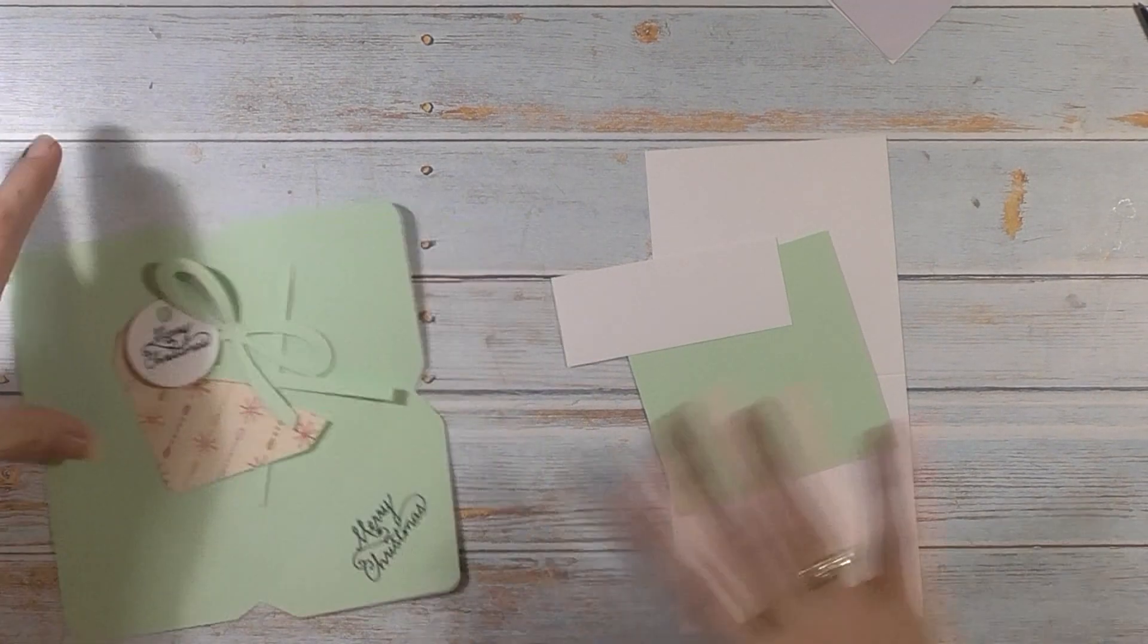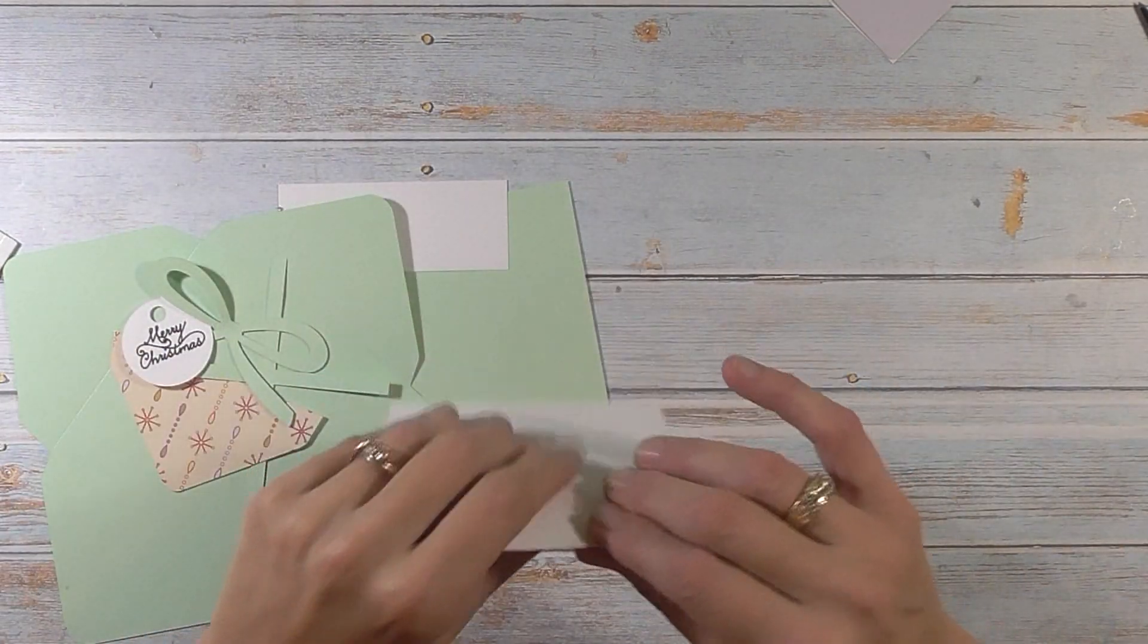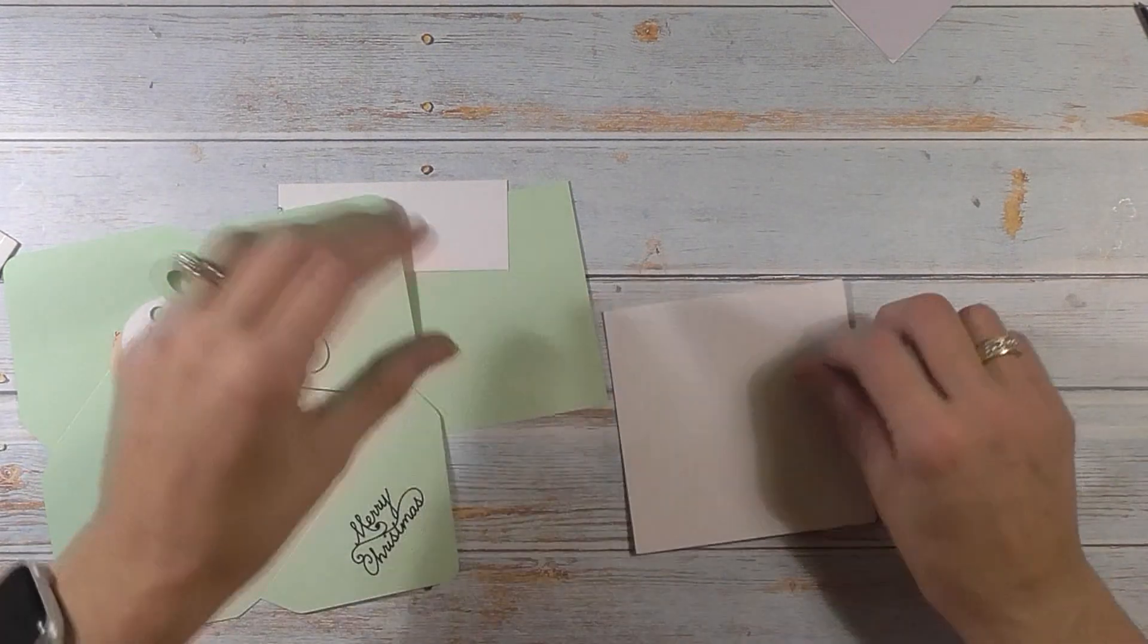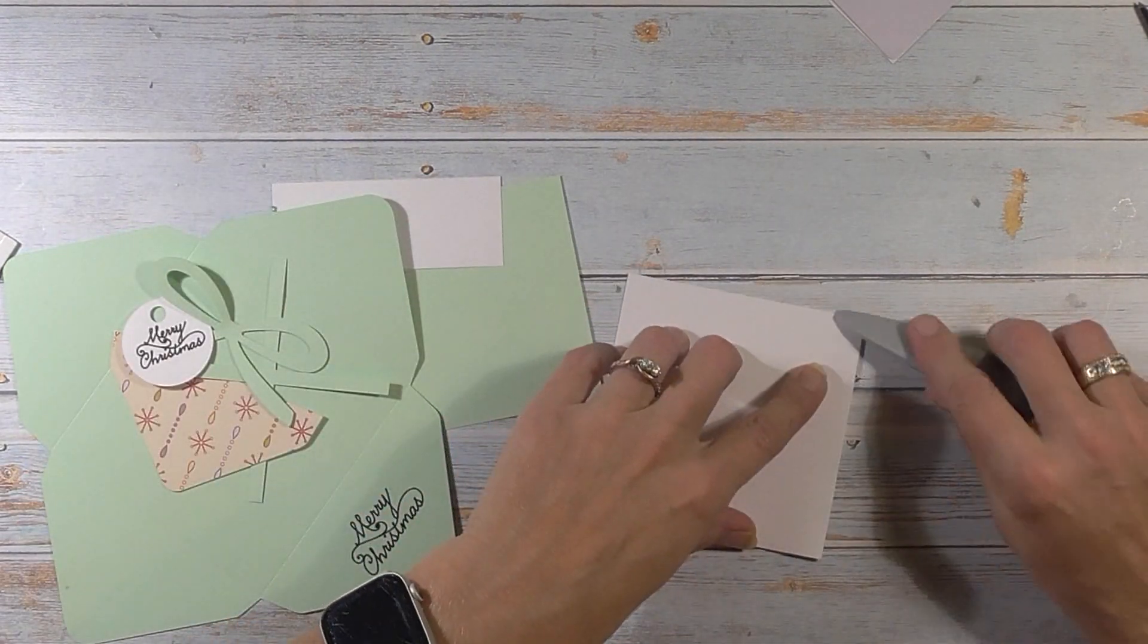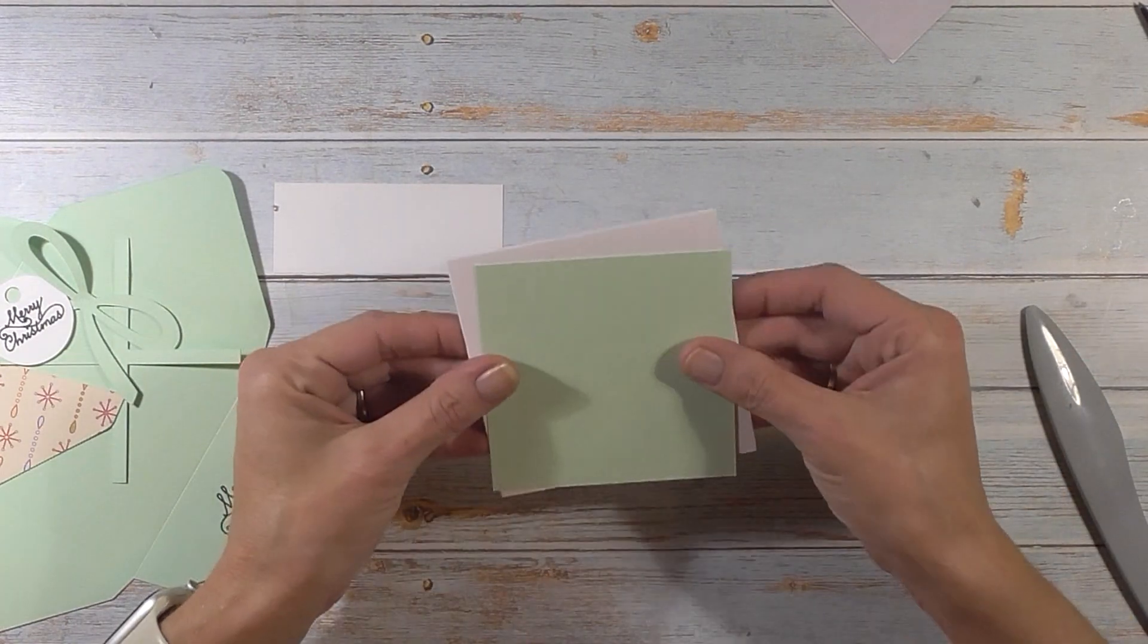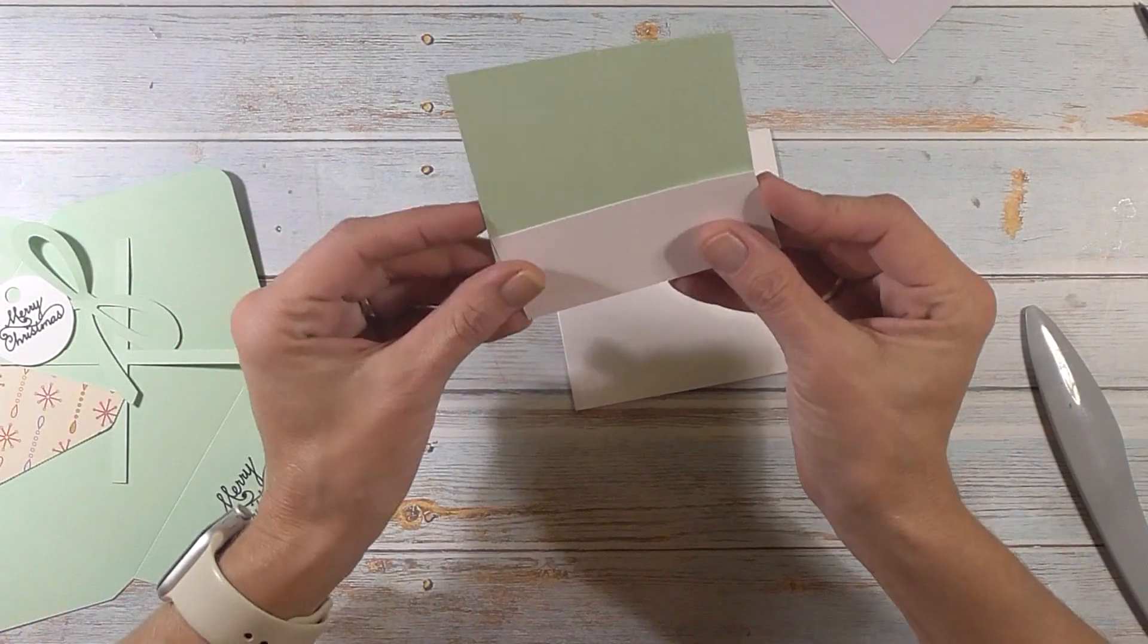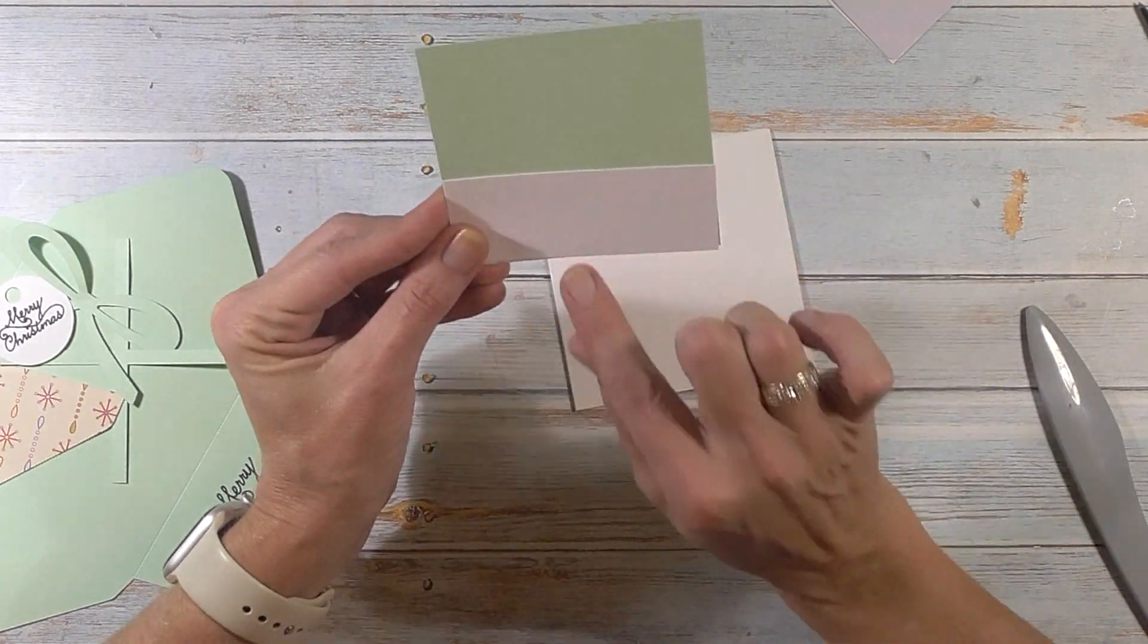Alright everything is cut out so I have the pieces that I cut with my trimmer. So this is the card base four by eight and we scored that at four inches. Take your bone folder and give it a nice crease. Then we have the piece for the inside. This was three and three quarter by three and three quarter. The white piece to go on top is one and a half by three and three quarter.